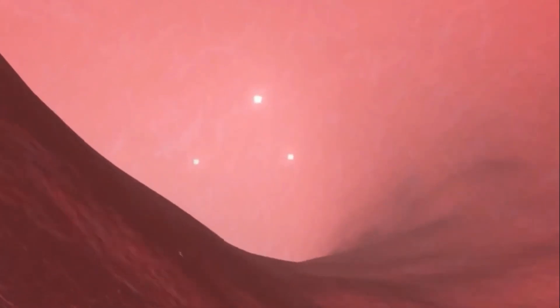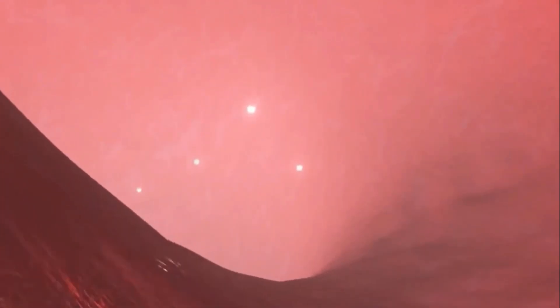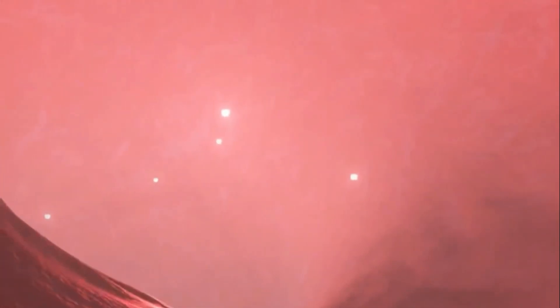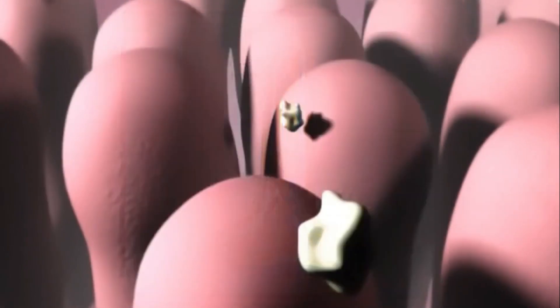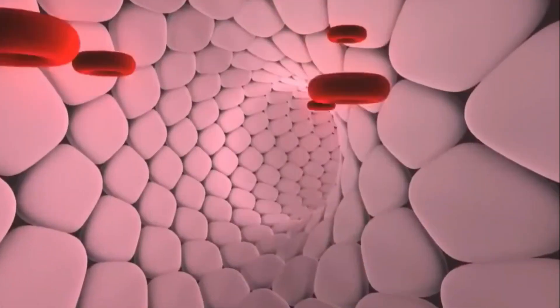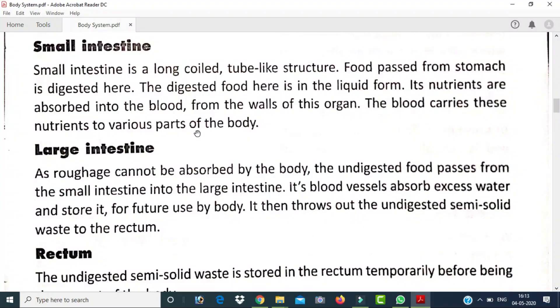Food is digested in the small intestine and converted into liquid form. The walls of the small intestine absorb the digested food easily and pass it into the blood. The blood carries these nutrients to various parts of the body.